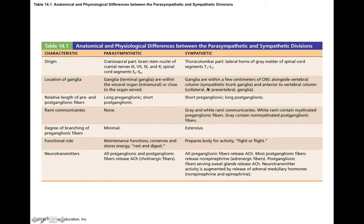With both parasympathetic and sympathetic divisions, we have ganglia because we have pre-ganglionic and post-ganglionic neurons. The ganglia of the parasympathetic nervous system are called terminal ganglia, which are typically within or close to the visceral organ — intramural. The reason they are so close is that the pre-ganglionic neurons are long and the post-ganglionic neurons are short.